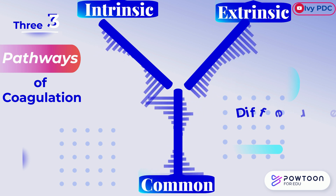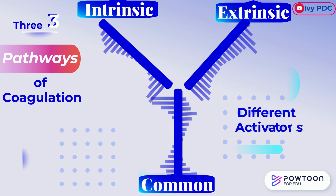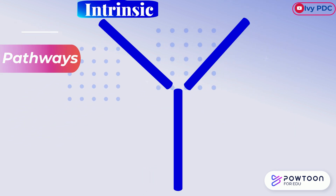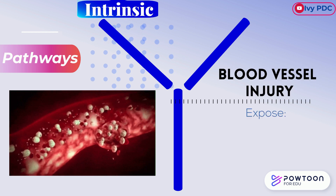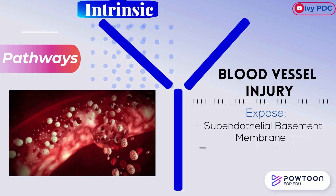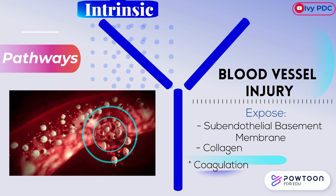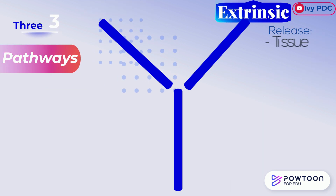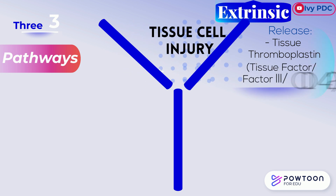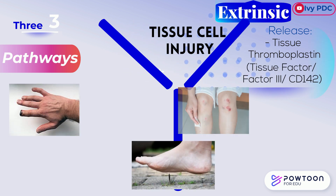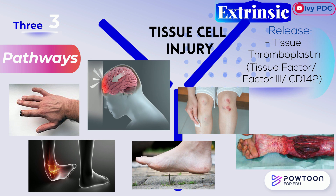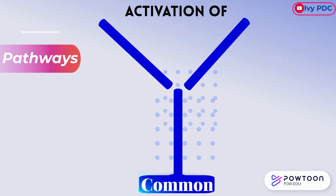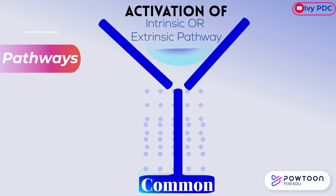Each pathway is activated by a different mechanism. The activation of the intrinsic pathway occurs when a blood vessel is injured, exposing the subendothelial basement membrane and collagen — both surfaces promote coagulation. The extrinsic coagulation pathway is activated by the release of tissue thromboplastin into the plasma from injured tissue cells. And the common pathway begins with activation by either the intrinsic or the extrinsic pathway.